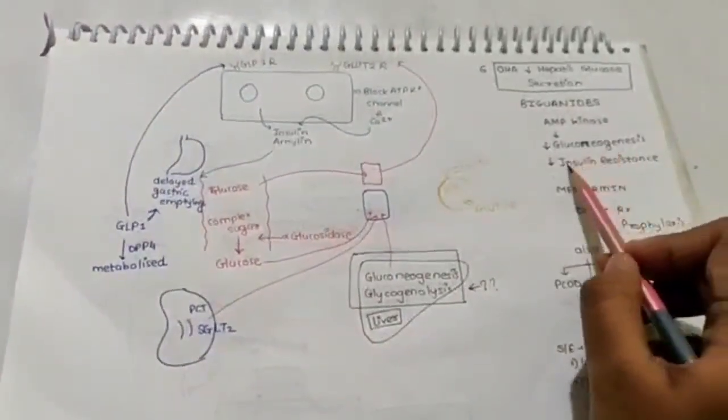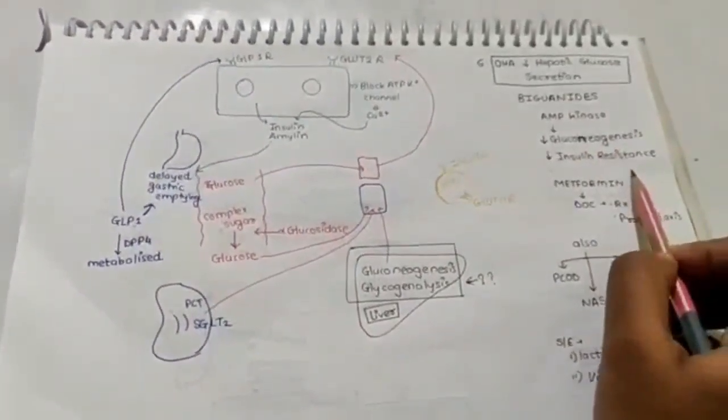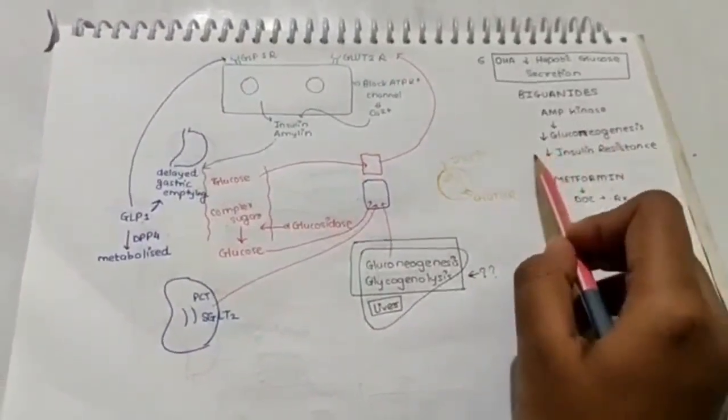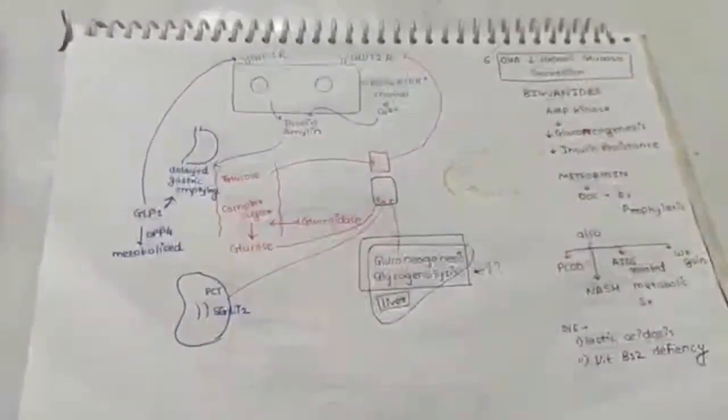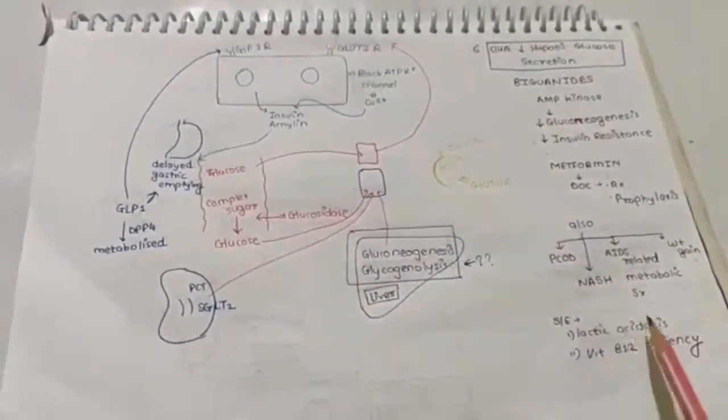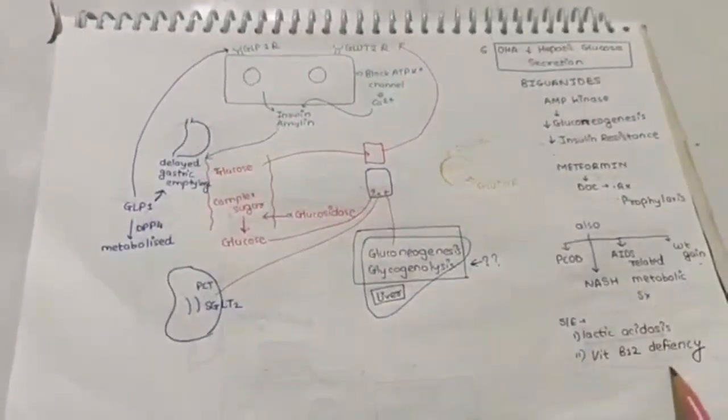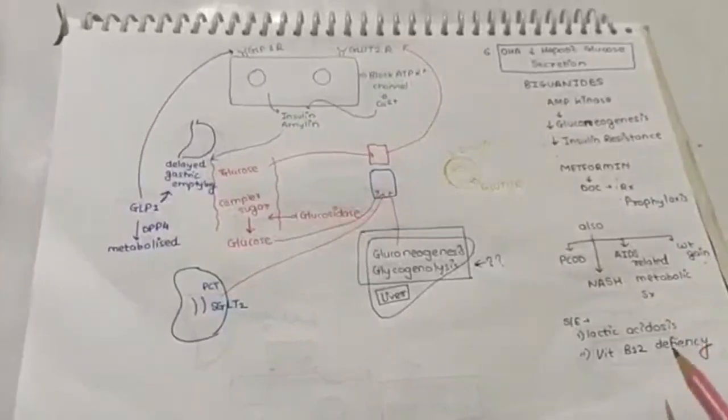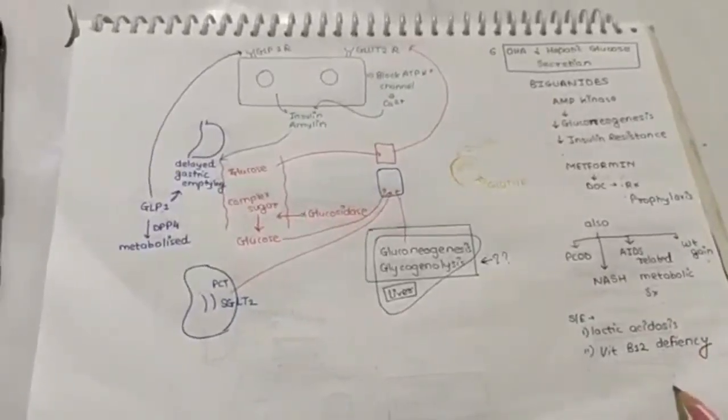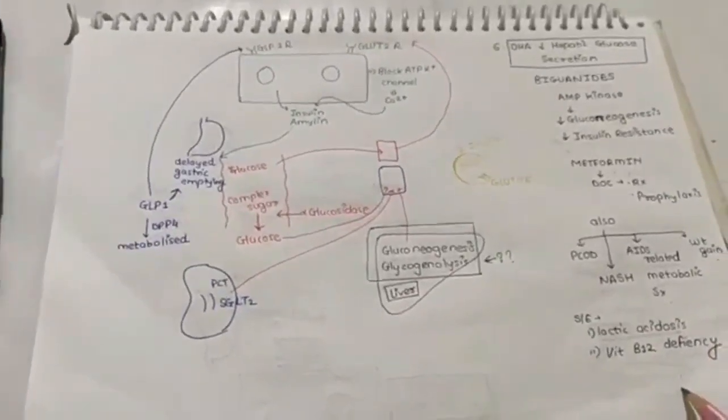Therefore it will reduce the blood glucose level. Very common side effect of metformin is lactic acidosis. Other long-term use will lead to vitamin B12 deficiency because it causes defect in the absorption of vitamin B12 from the intestine.